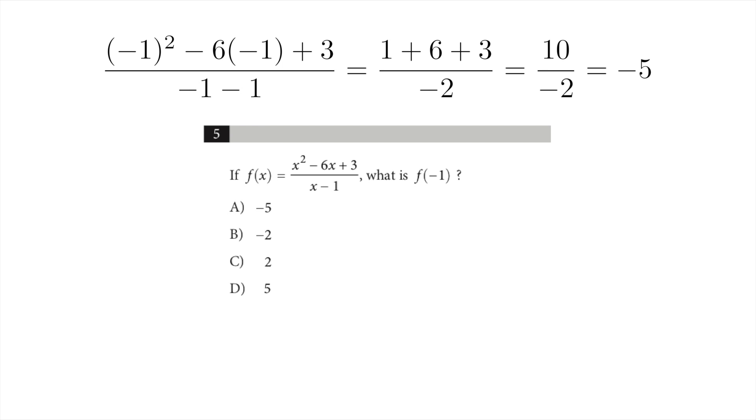In the denominator, we have minus one, minus one, which is minus two. Ten divided by minus two is minus five.